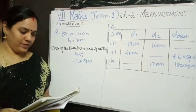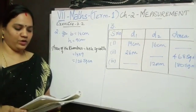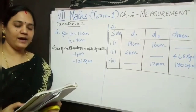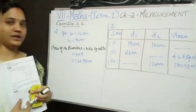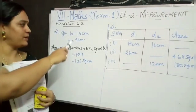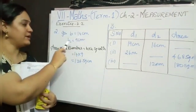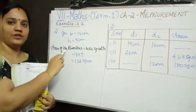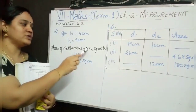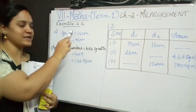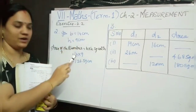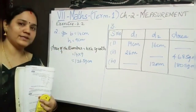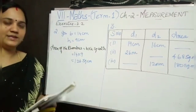The second problem is: find the area of the rhombus whose base is 14 cm and height is 9 cm. Base is given as 14 cm and height is given as 9 cm. We are using B into H formula since base and height are given. Multiplying both, I got the answer as 126 square metre. I think it is very very easy.